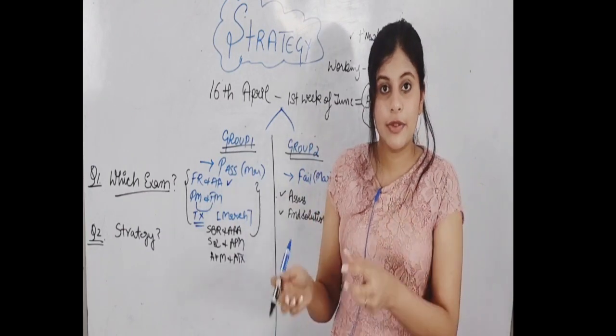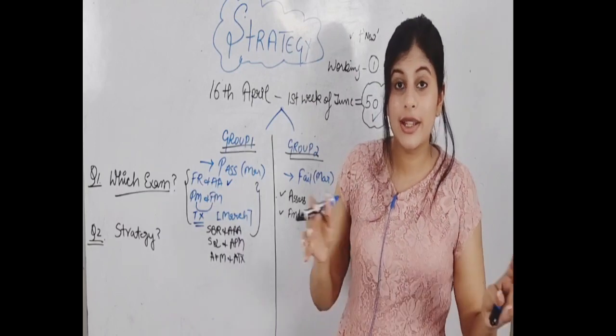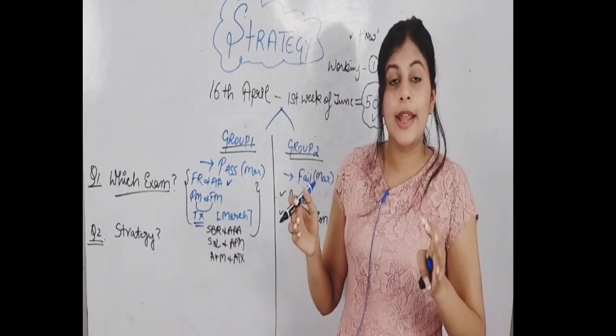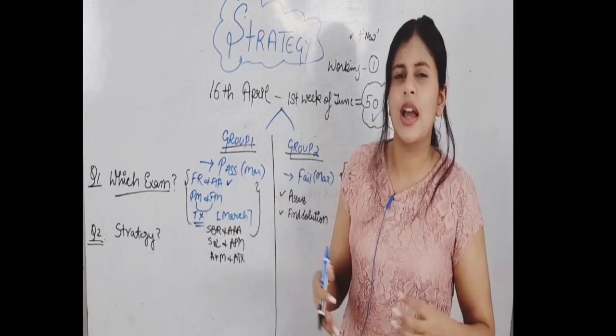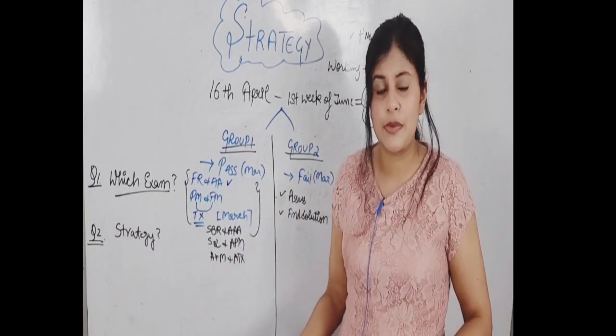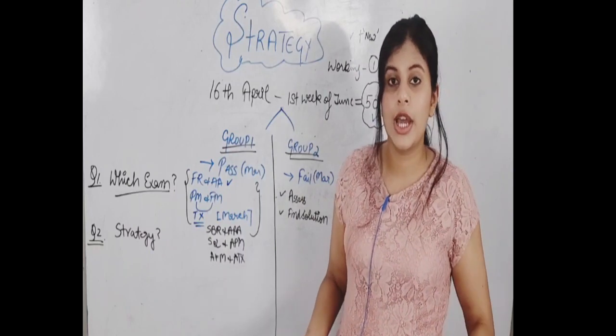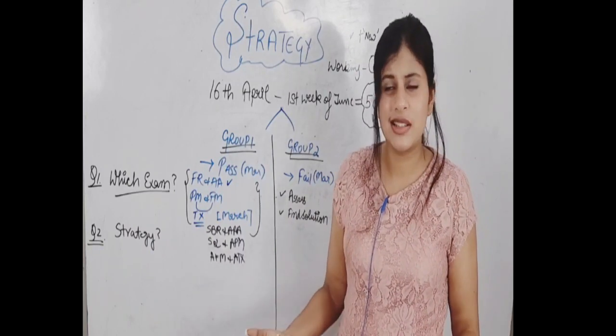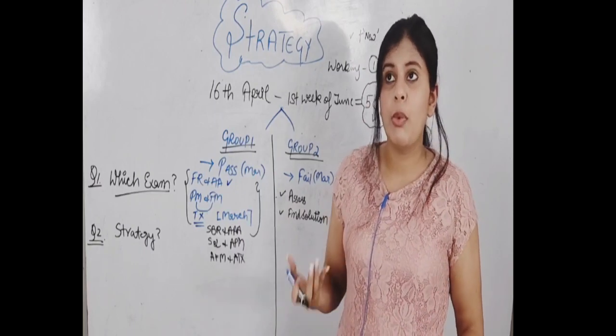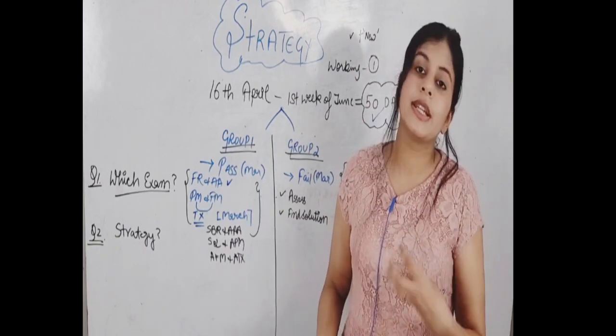If you're a full-time student, there is no harm in doing two subjects. Yes, you can manage different subjects in 50 days if your strategy is good. I did AFM and audit together within 20 days. I know one of them is professional, but I was able to manage. I scored a 70 in AA and a decent mark in AFM as well. The point is, if your strategy is right, you can easily manage this stuff.